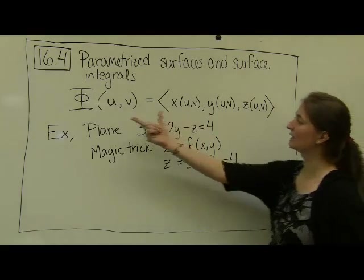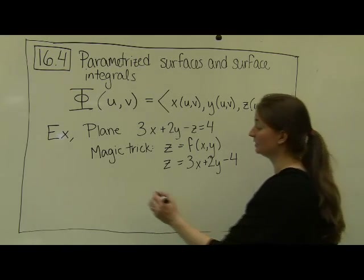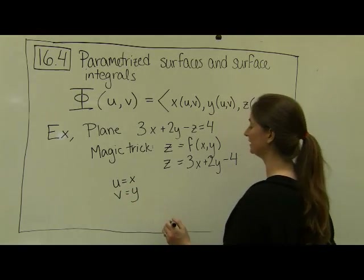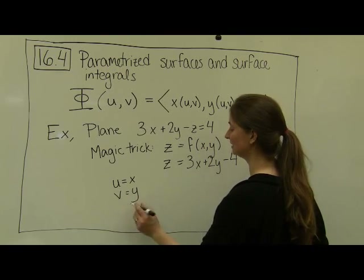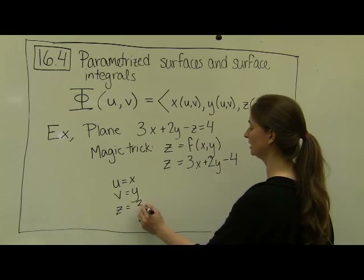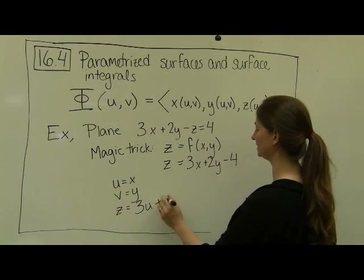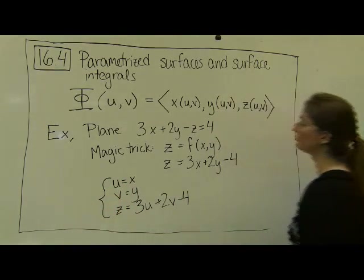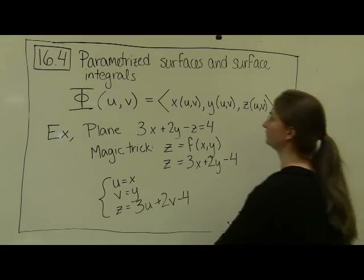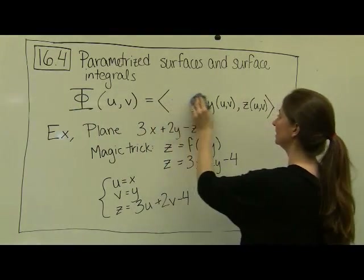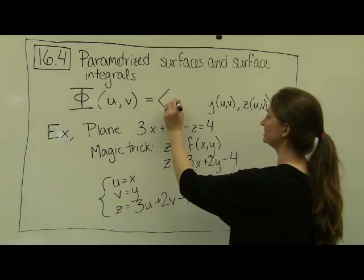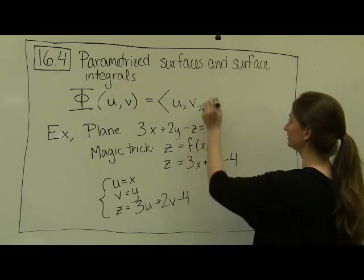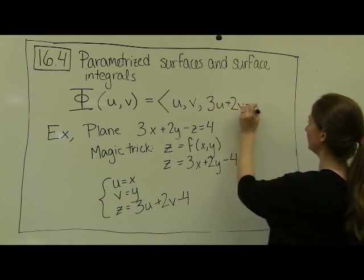The magic trick is to make the assignment of u's and v's as easy as possible. We simply set u equal to x and v equal to y. Then z becomes 3u + 2v − 4. So our parametric function for this plane has first component x = u, second component y = v, and third component z = 3u + 2v − 4.